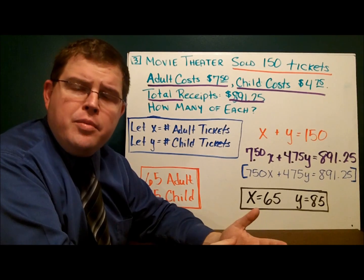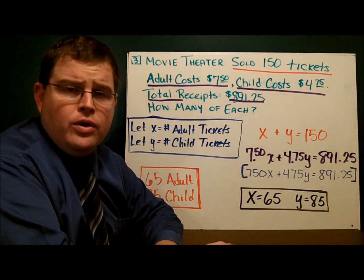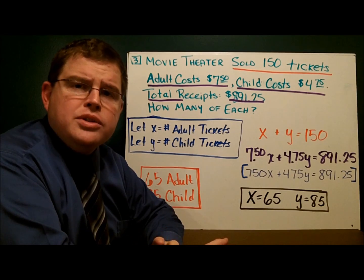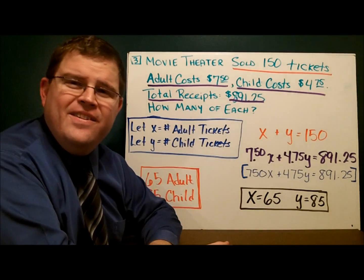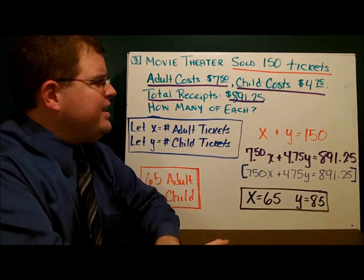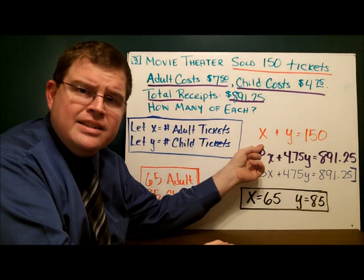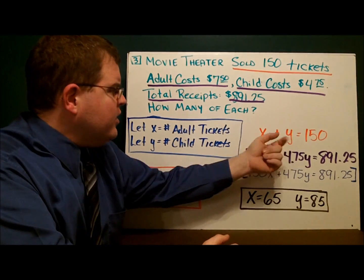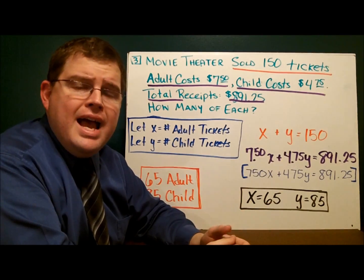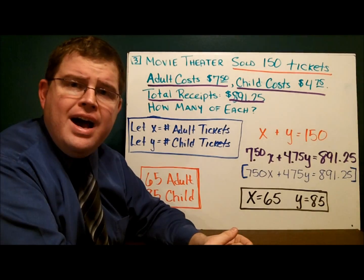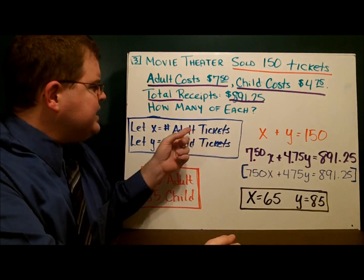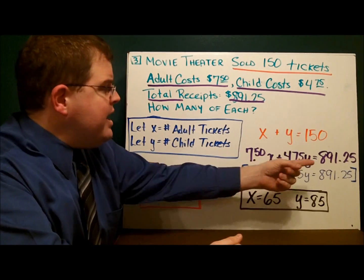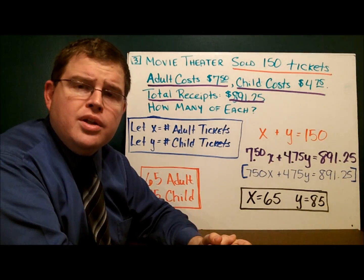Let x equal the number of adult tickets and y equal the number of children's tickets. We know we sold 150 tickets total, so x plus y equals 150. We also know the total revenue was $891.25. Each adult ticket costs $7.50 and each child ticket costs $4.75, so 7.50x plus 4.75y equals $891.25.